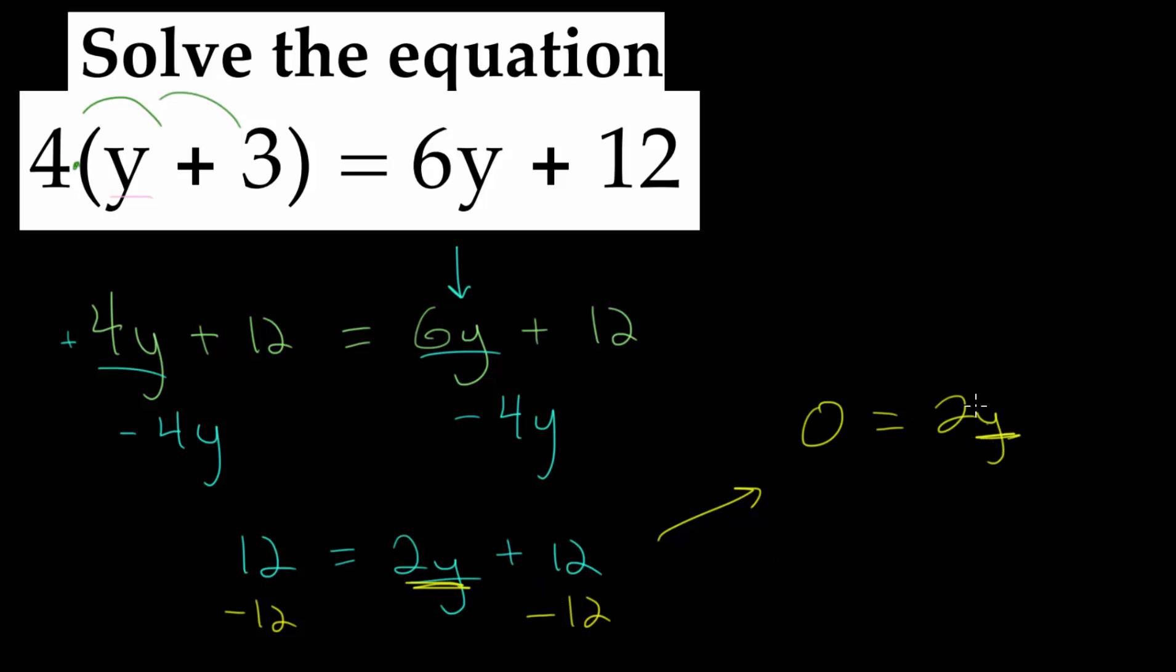To solve for y, we need to get rid of this multiplication by 2. To cancel out multiplication, we can use division. We divide both sides of the equation by 2. 0 divided by 2 is equal to 0. 2 divided by 2 is 1, so we have 1 times y, which is just equal to y.